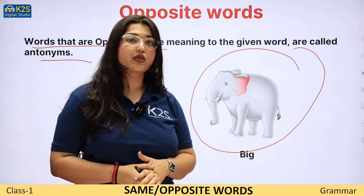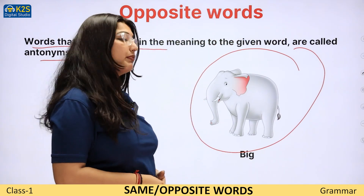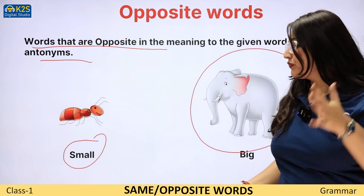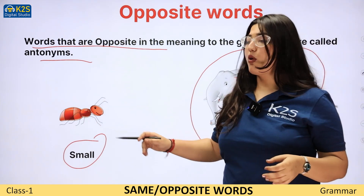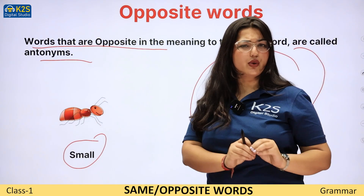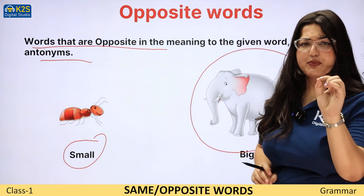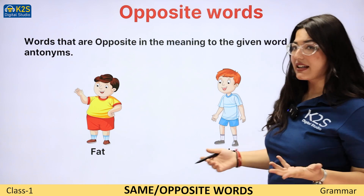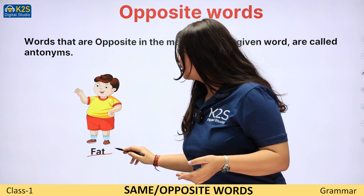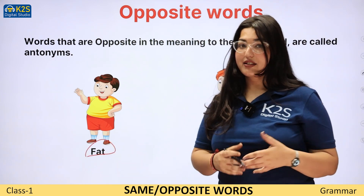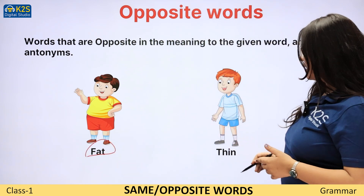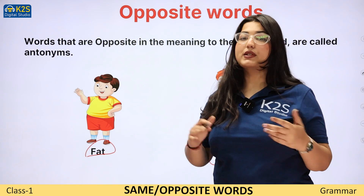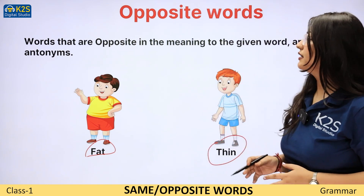Toh iske liye humne big use kiya. Big means very huge, kaafi bada. And small means kaafi chota — a very small creature. Fat ka opposite — thin. Bilkul hi opposite ho gaya.